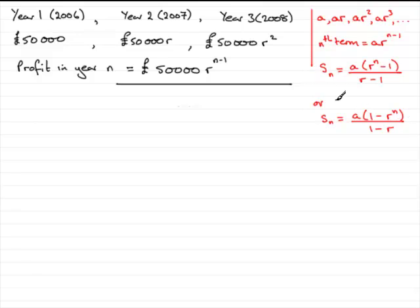Now it doesn't matter which one of these versions for Sn that you use, because they'll give you exactly the same answer. But people tend to prefer this one when the common ratio is more than 1 and this one when the common ratio is less than 1.